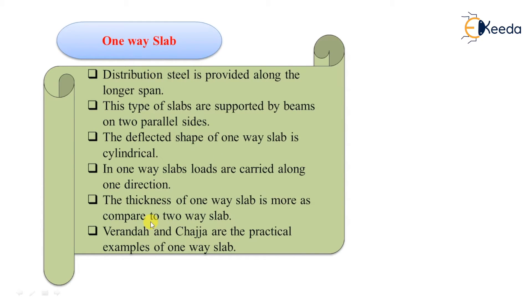In one way slab, loads are carried along one direction. In the design of one way slab, we provide less steel and hence depth of slab increases. Therefore the thickness of one way slab is more than two way slab. Chajja and verandas are the examples of one way slab.